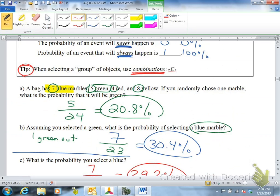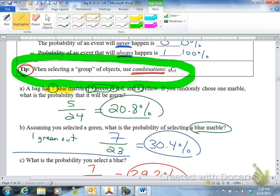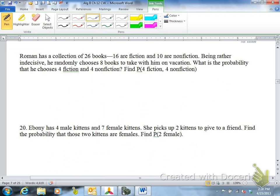The next one, I just want to remind you of this again, my tip. When selecting a group of objects, use combinations, NCR. So Roman has a collection of 26 books, 16 are fiction, and 10 are non-fiction. Being rather indecisive, indecisive means he can't choose what books he wants to take on vacation. Roman randomly chooses eight books to take with him on vacation. What's the probability that he chooses four fiction and four non-fiction?